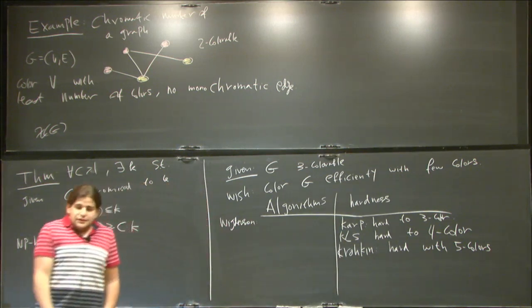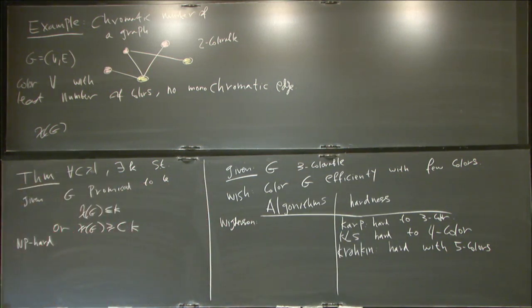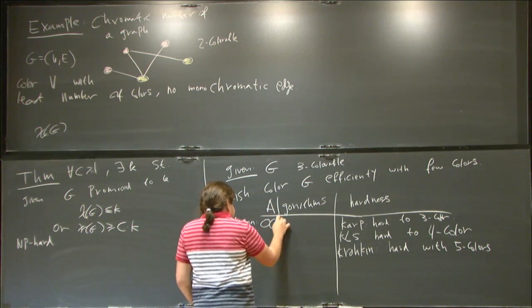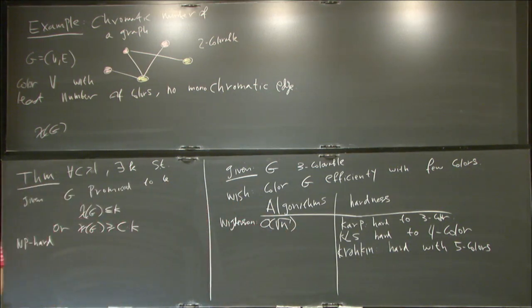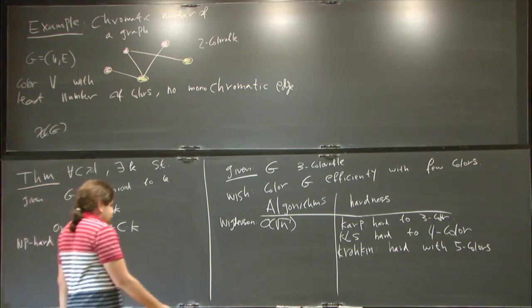And you would probably expect some number, right? But, no. It uses a square root of n colors, where n is the number of vertices. So, coloring something with n colors is trivial. But, this is less than that.